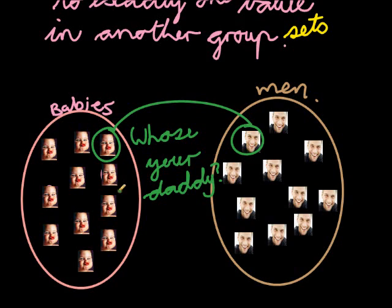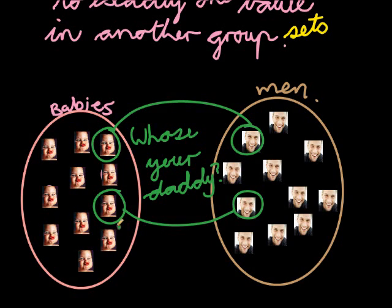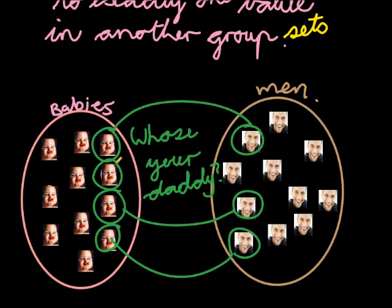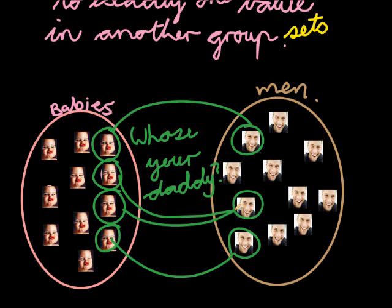We ask another baby, who's your daddy? He says, that guy's my dad. How about you? He says, that guy is my dad. This guy says, I've got the same dad as this dude. Is that possible? Can two babies have the same father? Of course — they can be twins, brothers and sisters, or whatever. The same dad can have more than one baby.